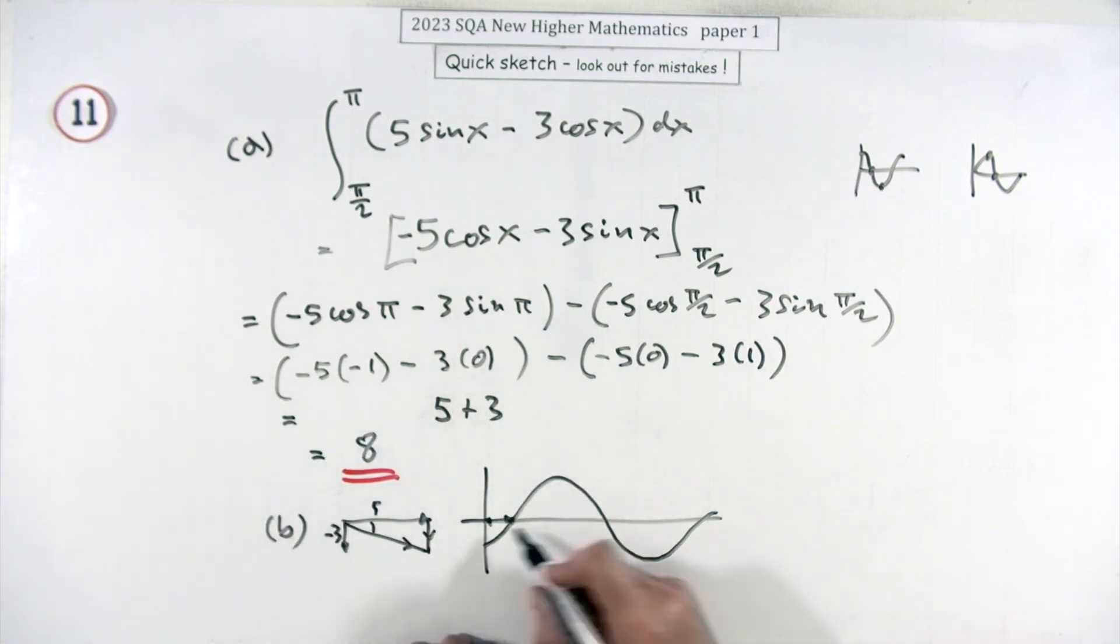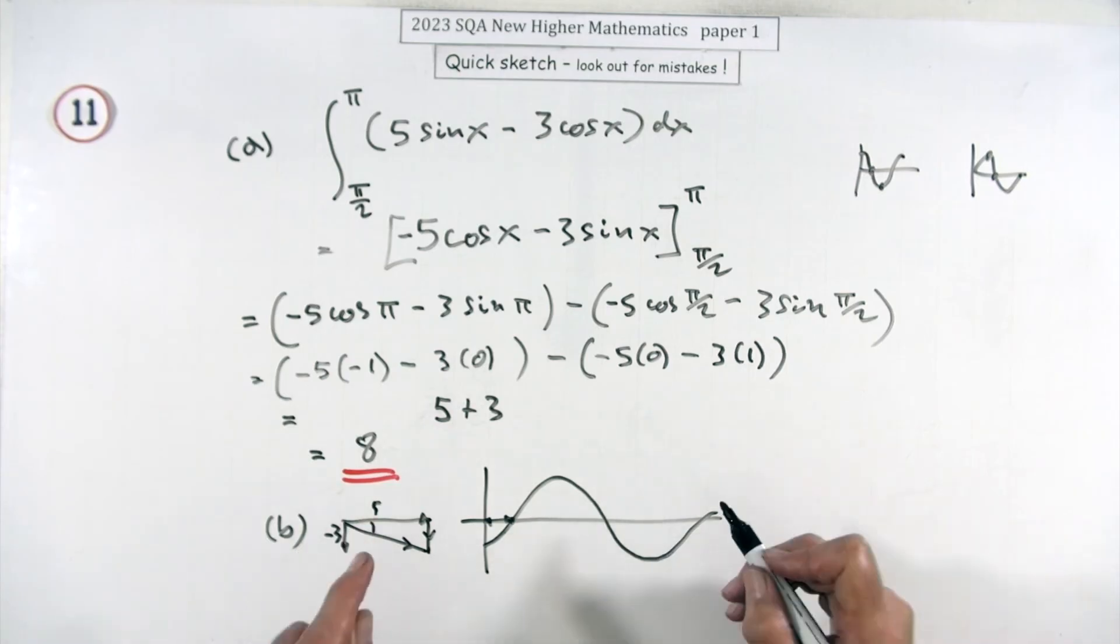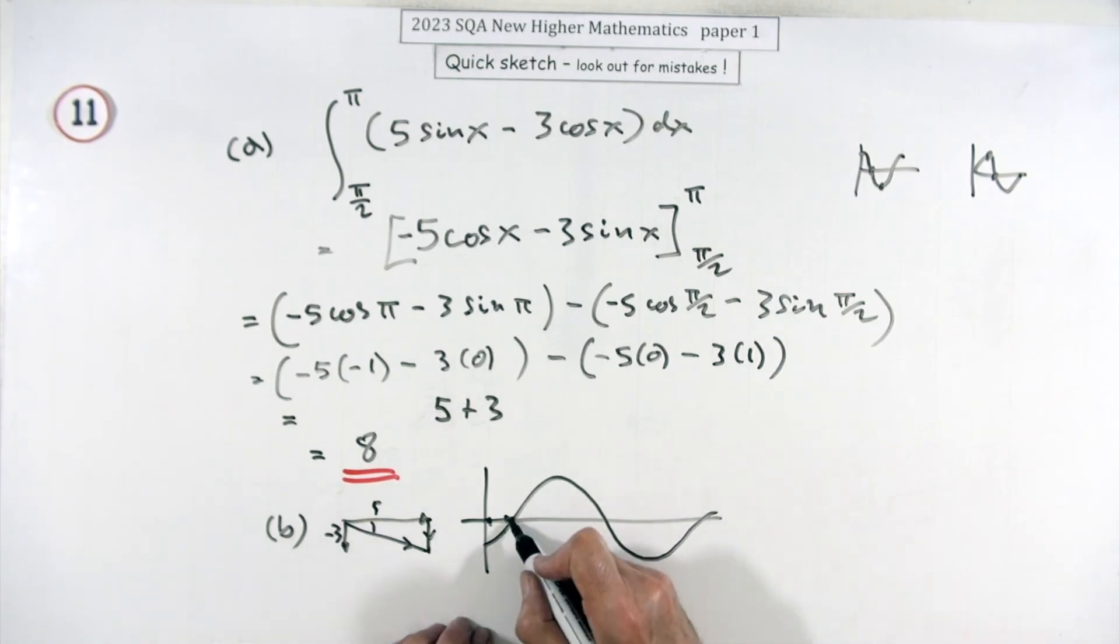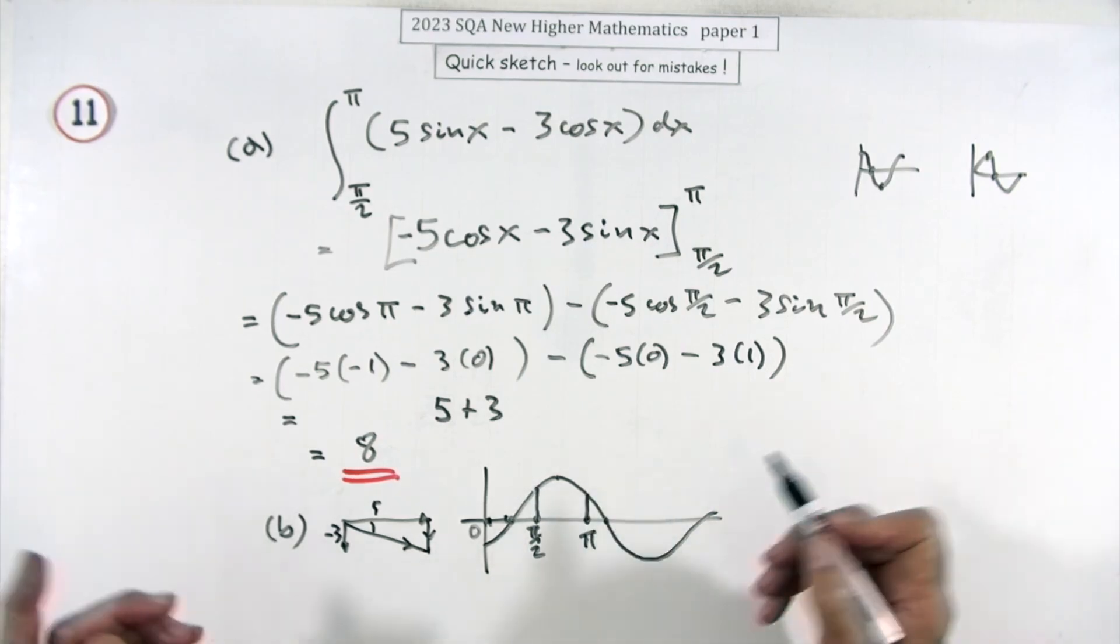This is like a sine graph that's been shifted forward thirty degrees. That would be the zero, going forward thirty degrees from there. That'd be ninety degrees more, so that's π/2 there. That would have been 180 degrees, so that would be π.